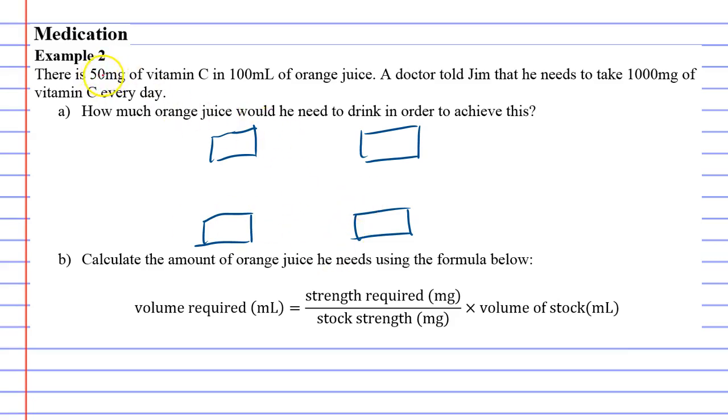So what we're going to do is first look at this and go: there's 50 milligrams in 100 milliliters of orange juice. I should have written mL there, it was up here.